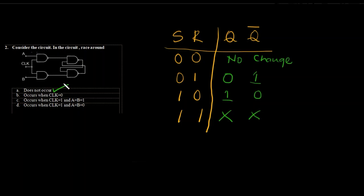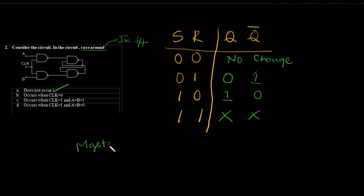That should be the answer. Race around is the condition where the change in the output causes the change in the input, and this changes the output again — so your output and input keep on changing, fluctuating. This race around condition is only a problem in the JK flip-flop. To overcome this, we went for master-slave arrangement.